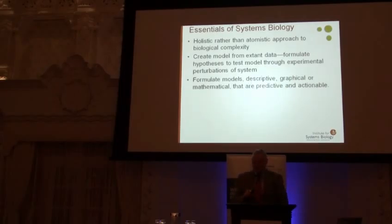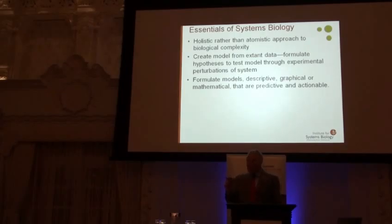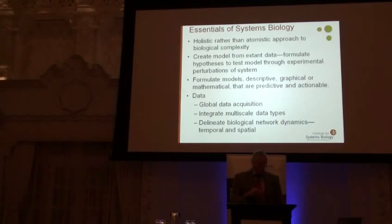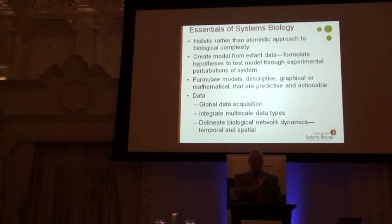What's really important about models is that they be, number one, predictive, and number two, in the case of medicine, actionable — meaning your model tells you something about the patient you can use to improve their lives. Systems biology looks at data in the way I described the Rube Goldberg apparatus: you need to look globally at the components and how they're connected one to another.